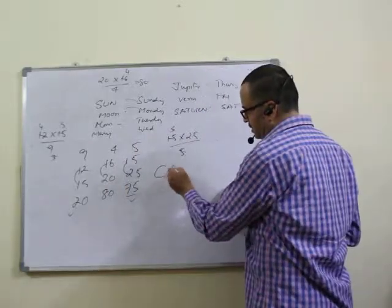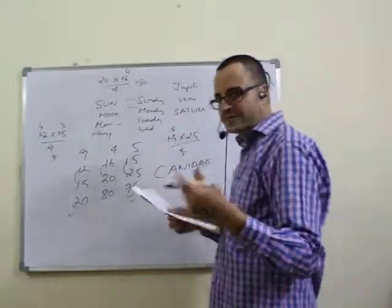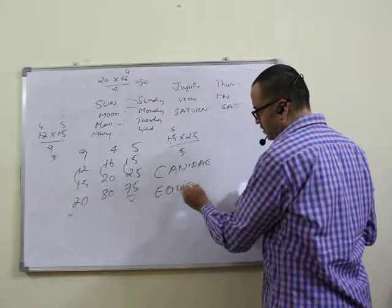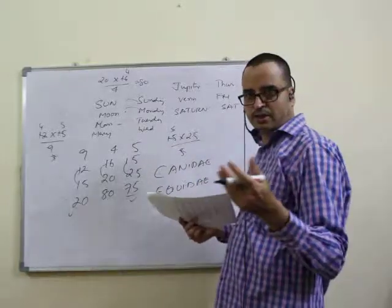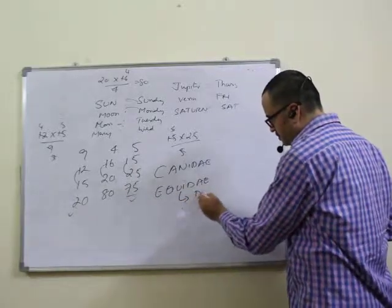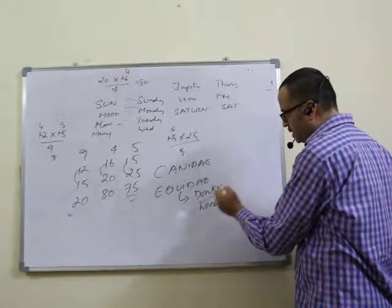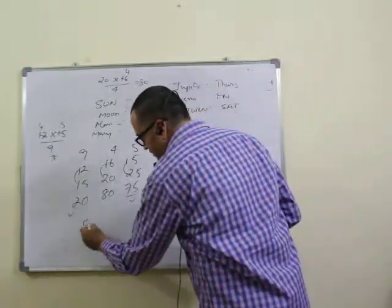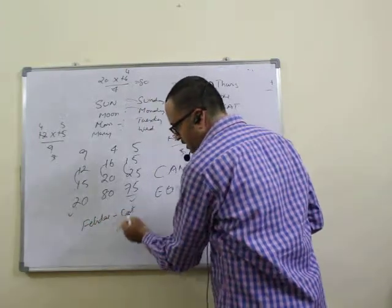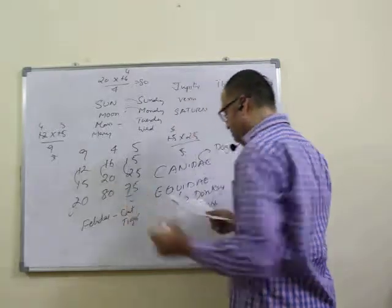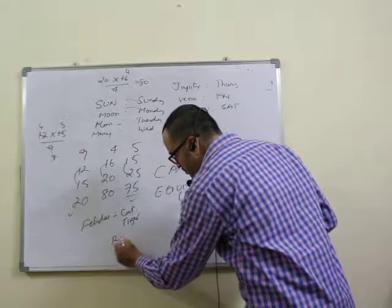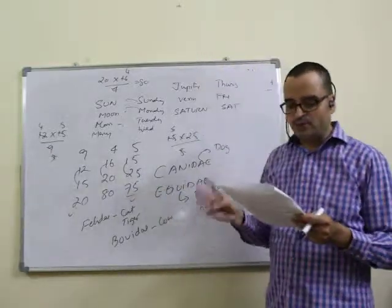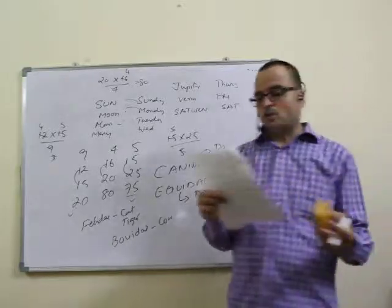Question twenty: Canis is to dog. The dog family (Canidae) includes dog, wolf, jackal, fox. Similarly Equidae is the horse family — horse, donkey. Felidae is the cat family — cat, tiger, cheetah. Bovidae is the cow family. So the answer relates to Bovidae — twentieth question, fourth option.